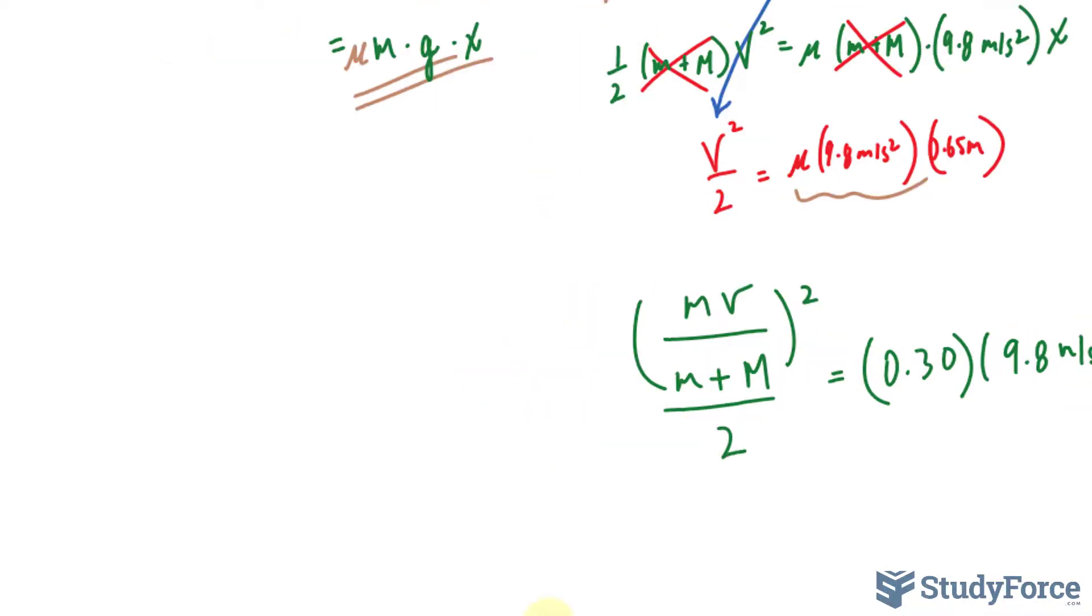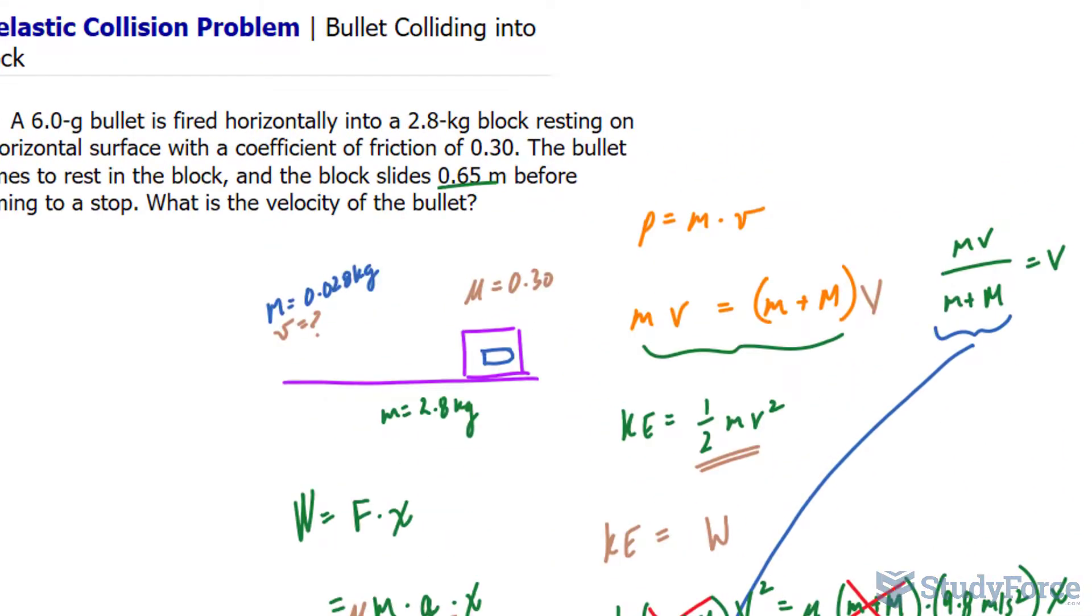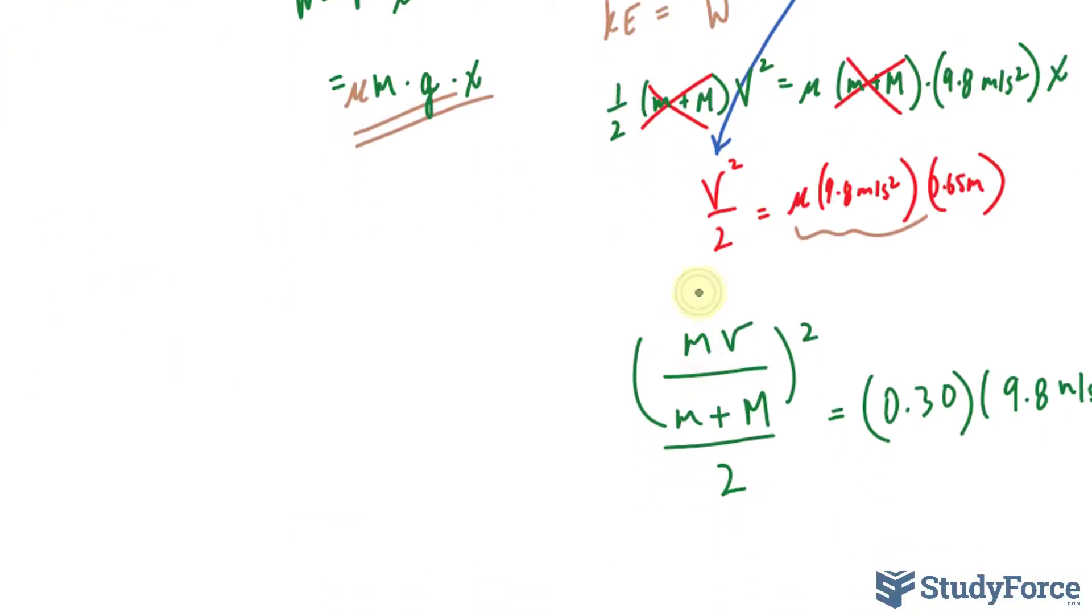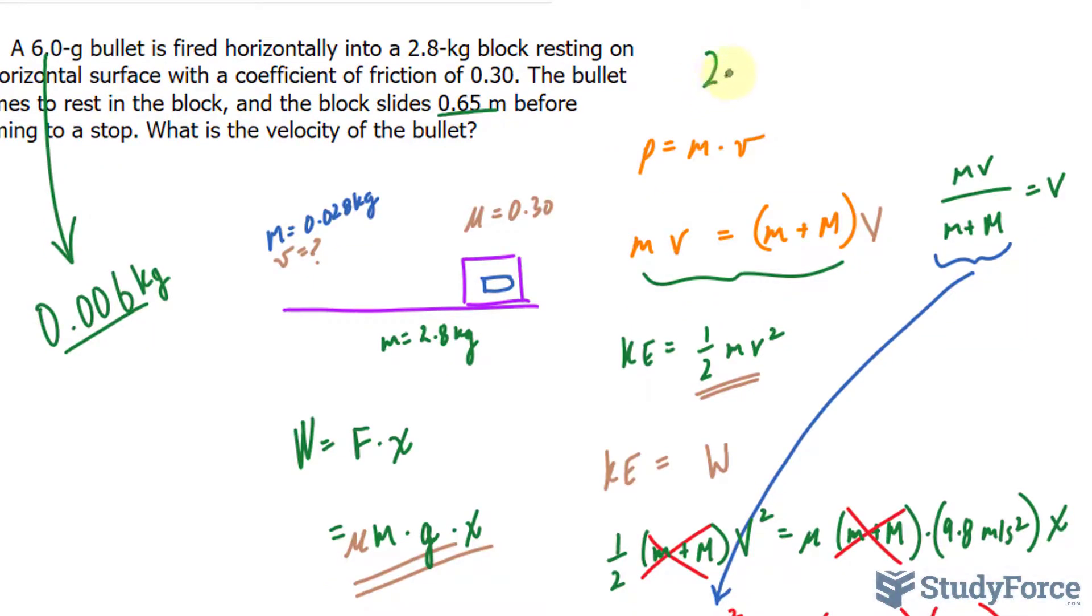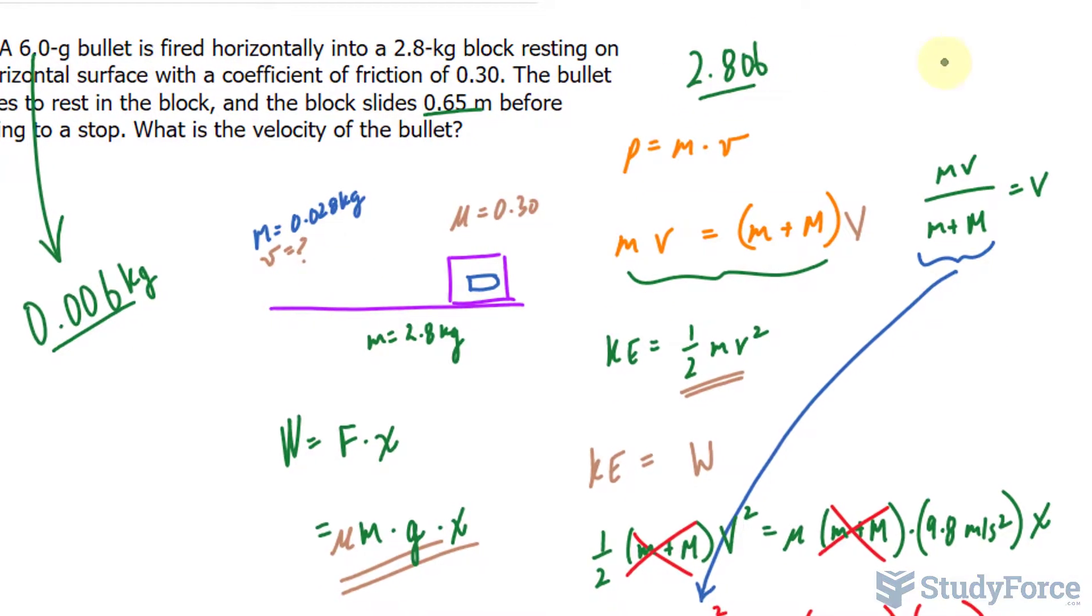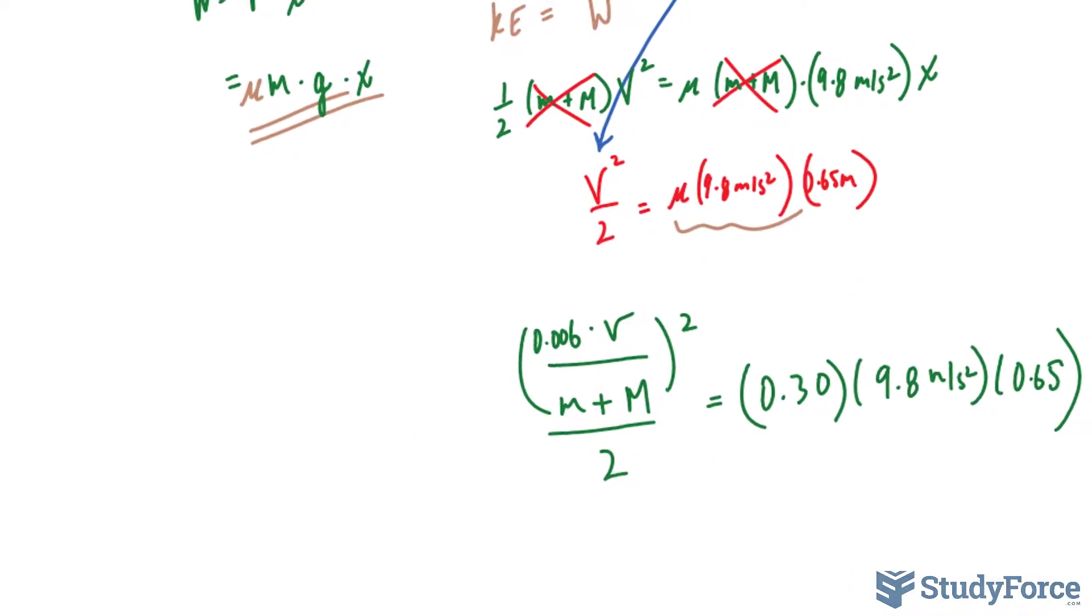Now we're told that the mass of the bullet is 6.0 grams. So in kilograms, that's 0.006 kilograms. I'll replace that into little m. 0.006, and 0.006 plus big M, which is 2.8, gives us 2.806. So that gets replaced into there.